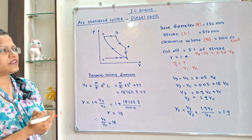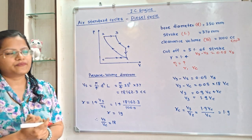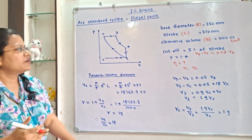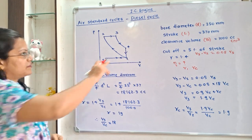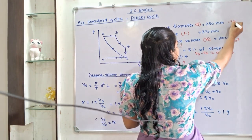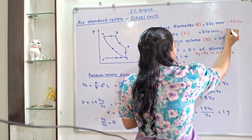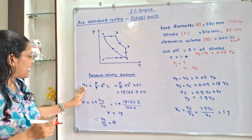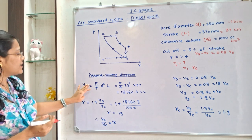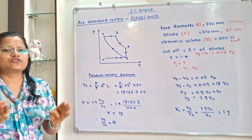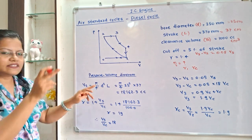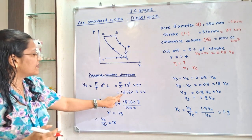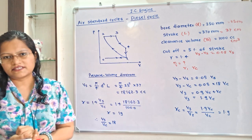Observing the data, bore diameter and stroke are given, and the clearance volume is given with units in centimetre cube. So we have to convert millimetres into centimetres: bore diameter becomes 25cm and stroke becomes 37cm. Using the formula Vs = (π/4) × D² × L, we calculate the stroke volume as 18162.3 cc.